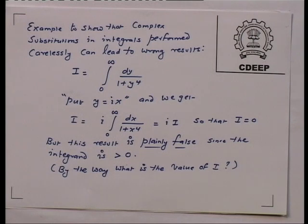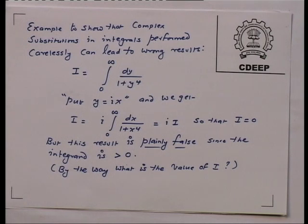By the way, what is the value of the integral I? I would like you to compute it. You have enough machinery at your disposal to calculate this integral I pretty efficiently — by reducing it to a gamma function. You are ultimately going to get gamma one-fourth, gamma three-fourths, and you have to use the reflection formula. Are you now convinced that making a complex substitution in a line integral can lead to disastrous results — not just wrong results, disastrous results.